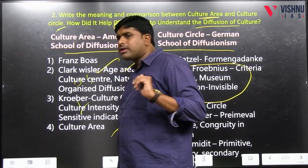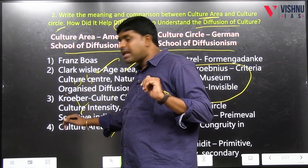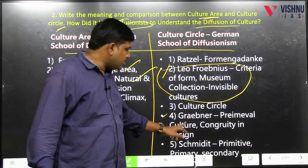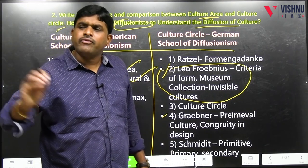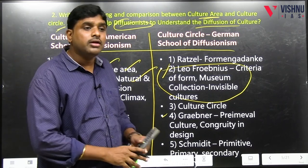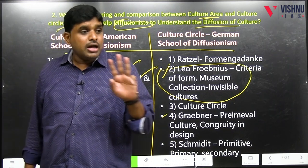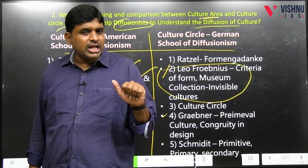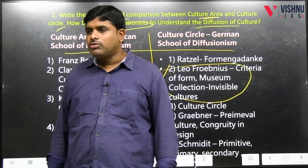Kroeber discussed food consumption — based upon food consumption, there are culture areas. Graebner: congruity of design — if we compare designs and the designs are the same, we conclude diffusion happened. Finally, Schmidt: four different culture circles — primitive culture circle, primary culture circle, secondary culture circle, tertiary culture circle — based upon social and economic aspects.